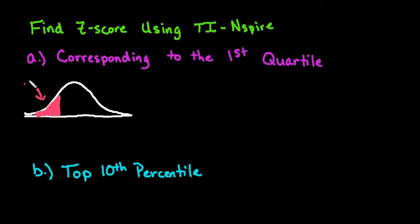Okay, so the first quartile has 25% of the area below it. When we're doing this in our graphing calculator, we want to use the inverse norm feature. On this, the parameters are that you have to have the area to the left, the mean, and the standard deviation.